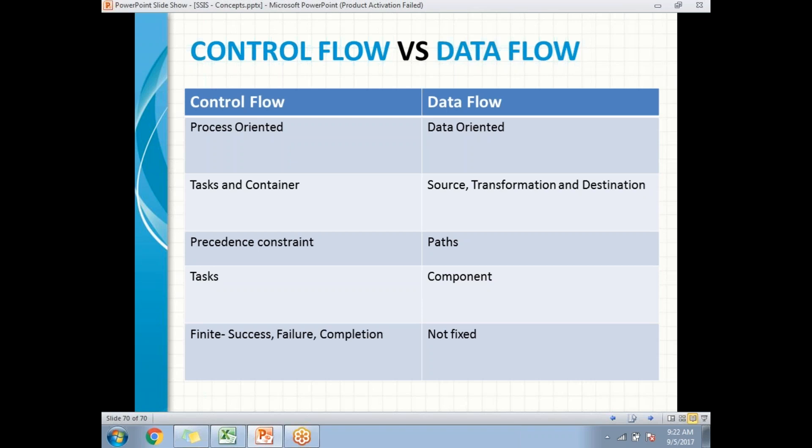Each and every task or container is connected through precedence constraints in the control flow, and the sources, transformations, and destinations are connected through paths in data flow. The smallest unit in the control flow is a task.